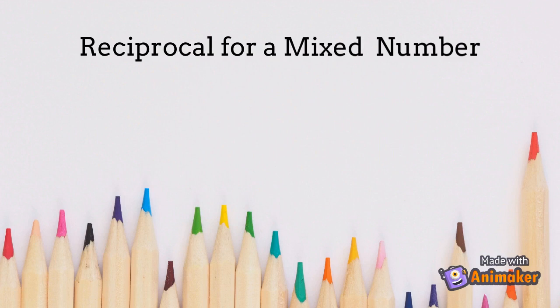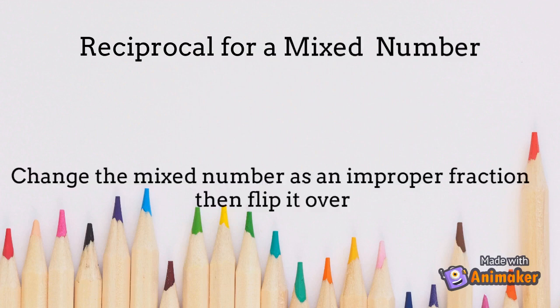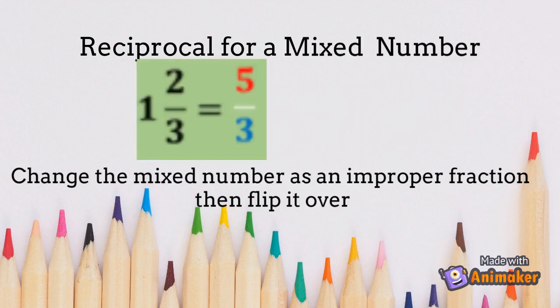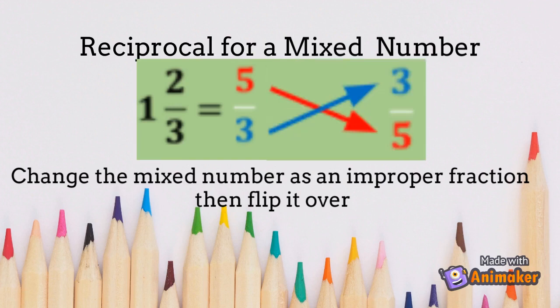To find the reciprocal of a mixed number, first change it as an improper fraction, then flip it over. Example: 1 and 2 thirds changed as an improper fraction becomes 5 thirds. When you flip it over it will be 3 fifths.